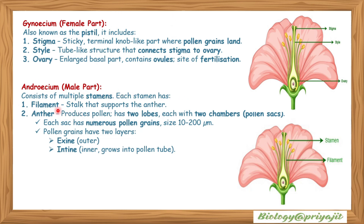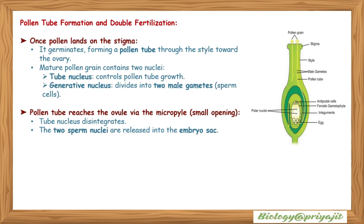The androecium — the male part — consists of multiple stamens. Each stamen has one filament, which is the stalk that supports the anther. The anther produces pollen and has two lobes, each with two chambers or pollen sacs. Each sac has numerous pollen grains. Pollen grains are approximately 10 to 200 microns in size and have two layers: exine, the outer layer, and intine, the inner layer, which grows into the pollen tube.